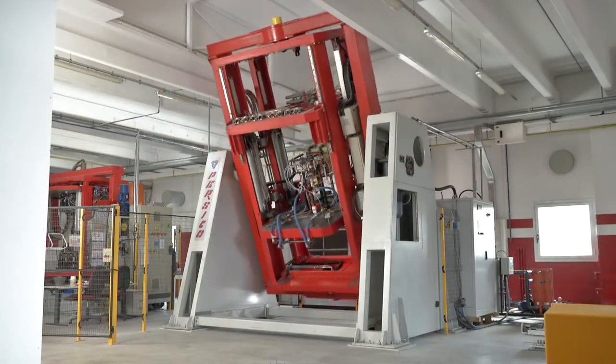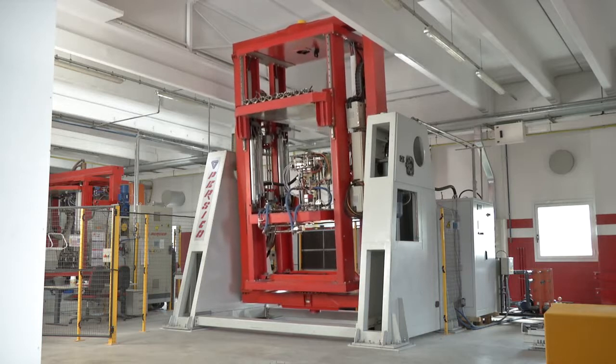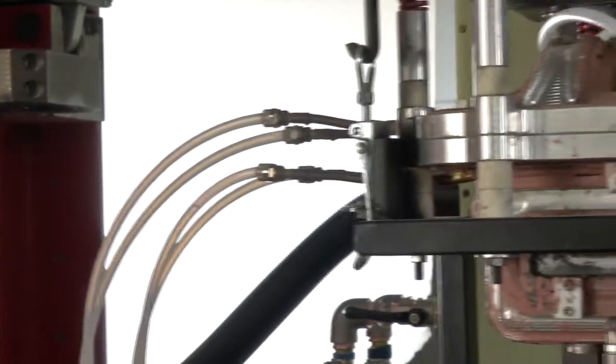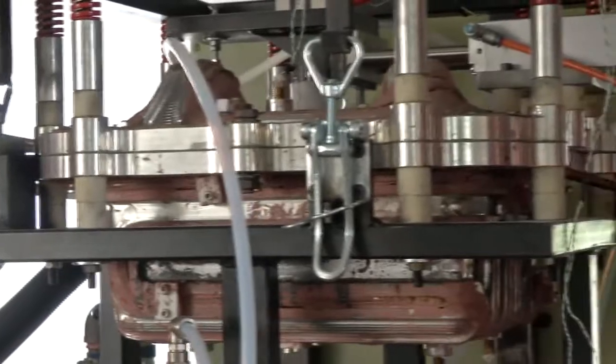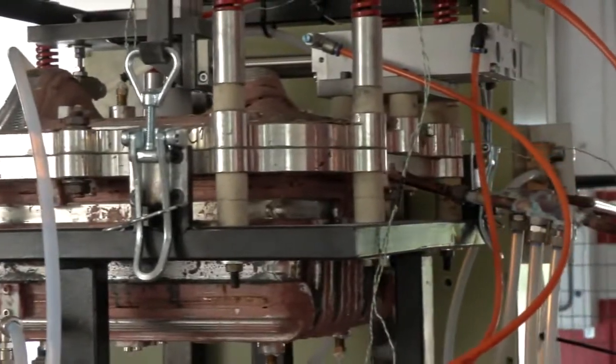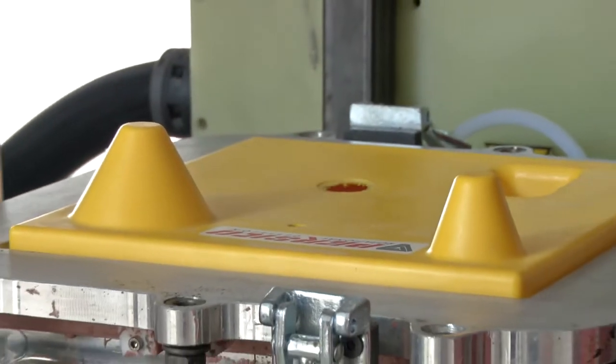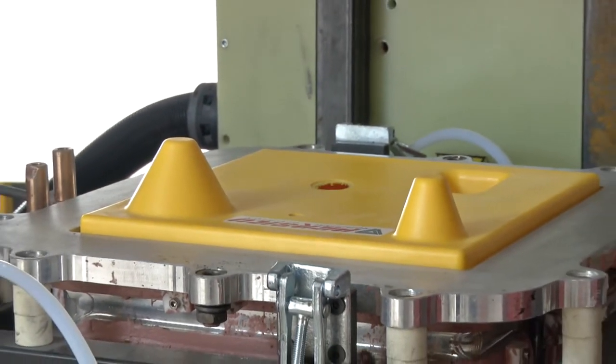Rotofast uses 4.5 times less energy than conventional machines with four stirrer ovens to produce the same part. Rotofast cycle times can be twice as fast than a conventional four stirrer oven.